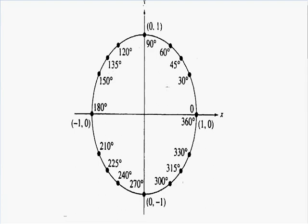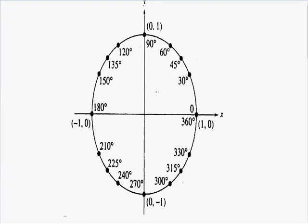First let's talk about all of the important angles in the unit circle. All angles that are multiples of 30 are important angles on the circle, so that's why we have 30, 60, 90, 120, 150, and we go all the way up to 360 degrees. Also, all multiples of 45 are important angles on the circle, so that's why we have 45, 90, 135, 180, once again all the way to 360.